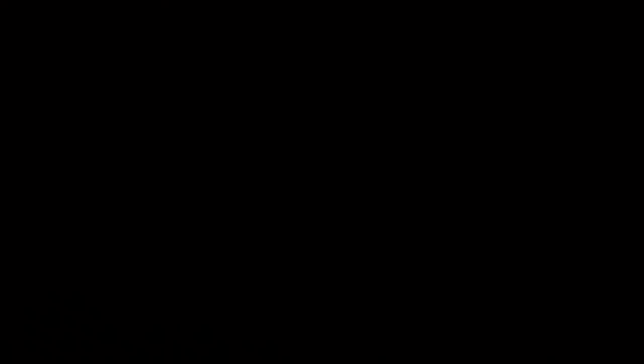Upgrade testing also had some issues. There were a couple of nasty bugs we missed — we didn't do enough testing of actually having a live running system with real workloads and then upgrading. We missed a bug in the compatibility of EC2 IDs, which we've since fixed and backported to stable Folsom. Basically if you had EC2 IDs in Essex and upgraded without the fix, you'd end up with new IDs. There's also a volume upgrade bug related to integer-to-UUID conversion — if you had old volumes, they'd end up with new IDs requiring unexport and re-export.